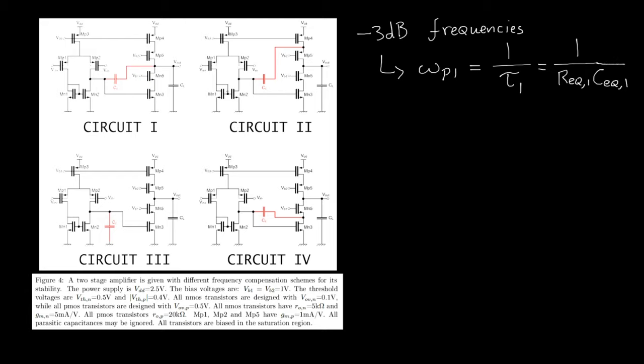Among all four options, the output resistance of the first stage is going to remain the same. It's the output resistance of MP2 in parallel with the output resistance of MN2. The equivalent capacitance will change between the options, so we're going to analyze that.